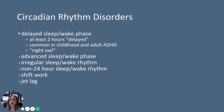You can have the opposite: advanced sleep-wake phase, where someone wants to go to bed at 10 but their body wants to go to bed at 8. You can also have an irregular sleep-wake rhythm where it just doesn't follow a regular cycle, or a non-24-hour sleep-wake rhythm where your body's circadian rhythm is maybe 28, 30, or 18 hours. Shift work can be very confusing to the body's sleep-wake system, and jet lag is a really common example of circadian disruption when traveling to a different time zone.